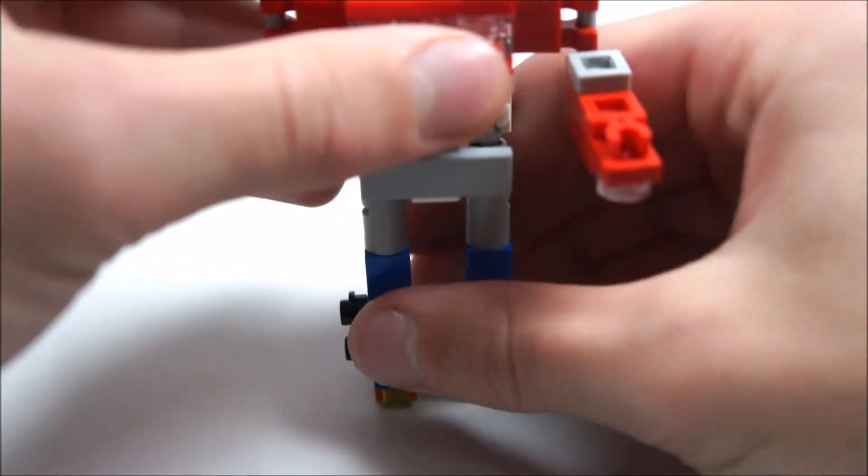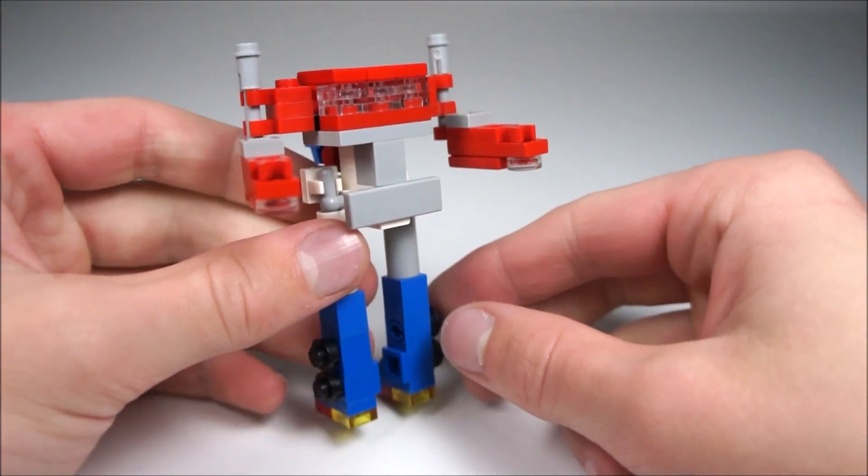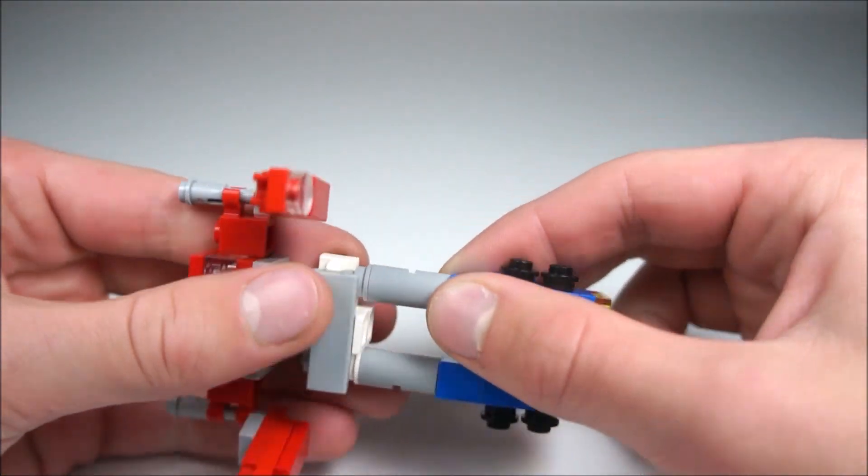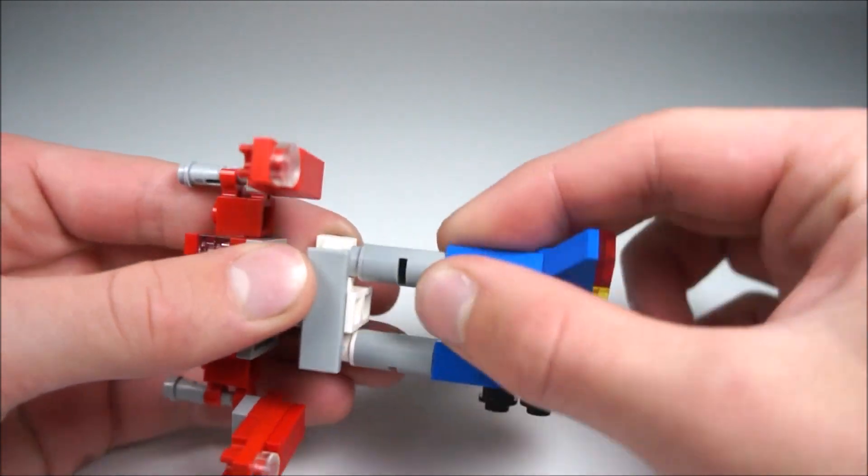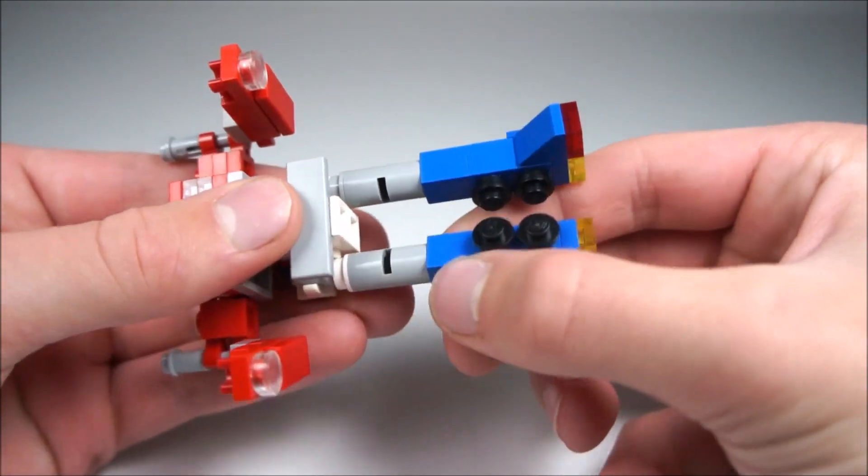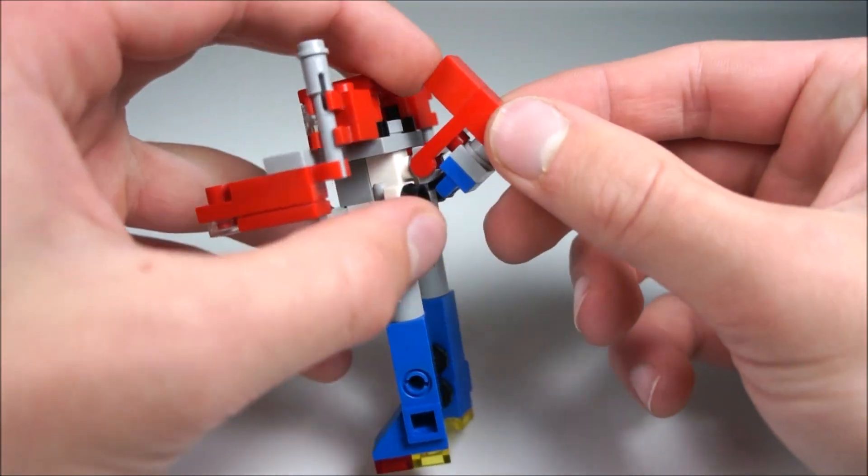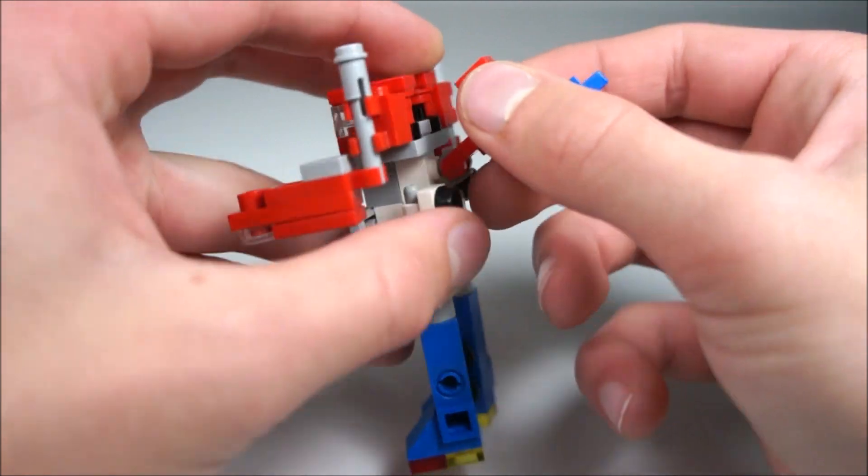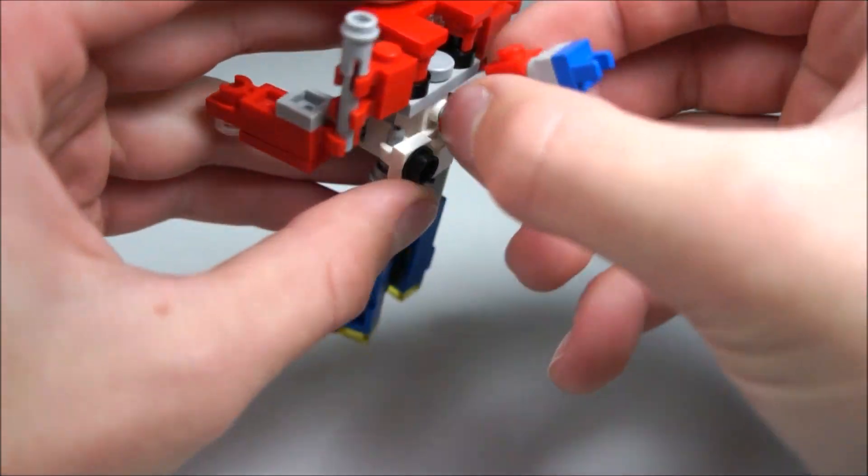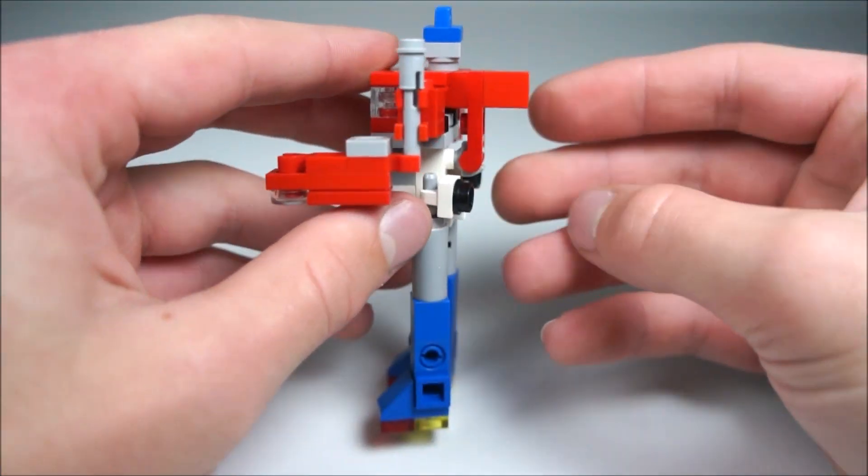Then you're going to stand him up. Now we're going to twist his legs around. Just flip those around. Here's his feet. And then you're going to pull this down. Same transformation for the head, practically. Flip that around. Twist that around. And push that back in. It looks nice.